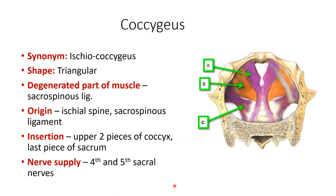The coccygeus, also known as the ischiococcygeus, is triangular in shape. The degenerated part of this muscle is the sacrospinous ligament. Its origin is from the ischial spine and sacrospinous ligament, and it is inserted into the upper two pieces of coccyx and the last piece of sacrum. It is supplied by the fourth and fifth sacral nerves. The pubococcygeus, iliococcygeus, and ischiococcygeus parts can be seen in the picture.